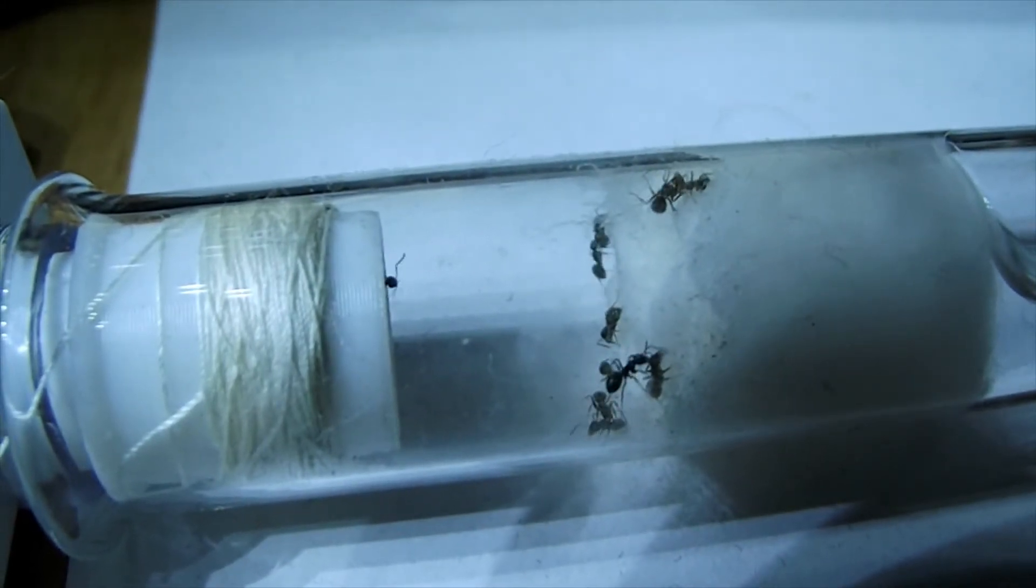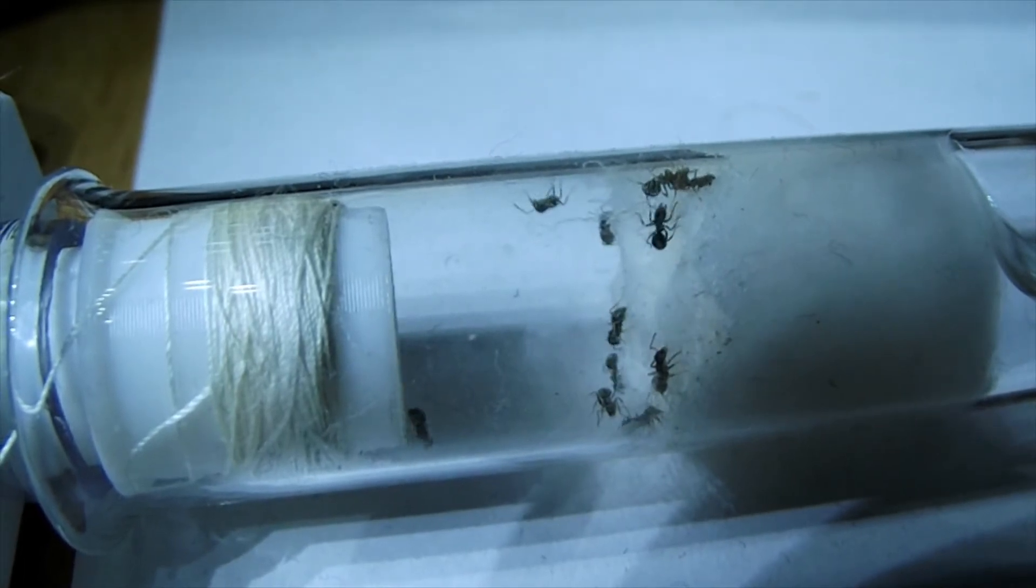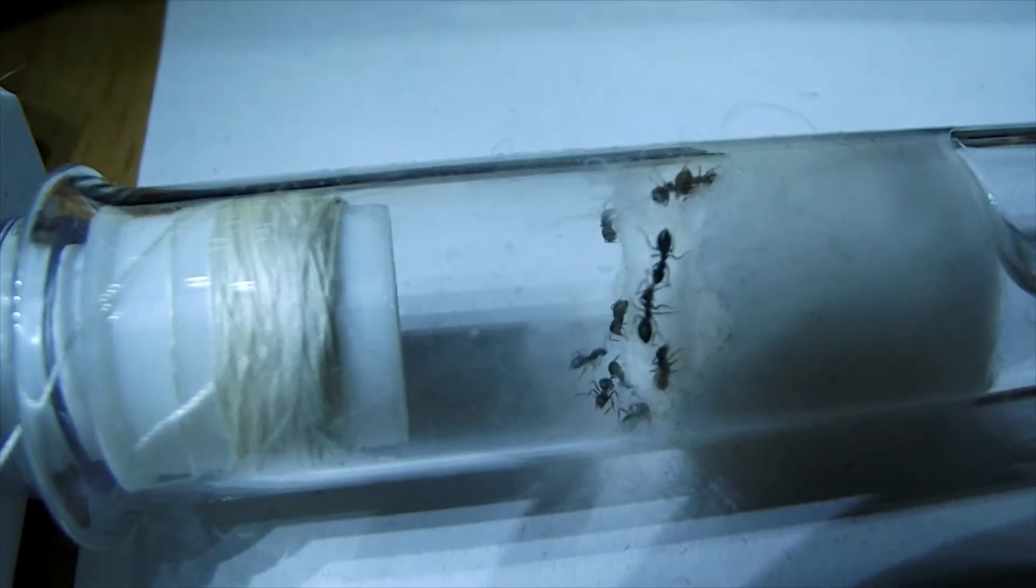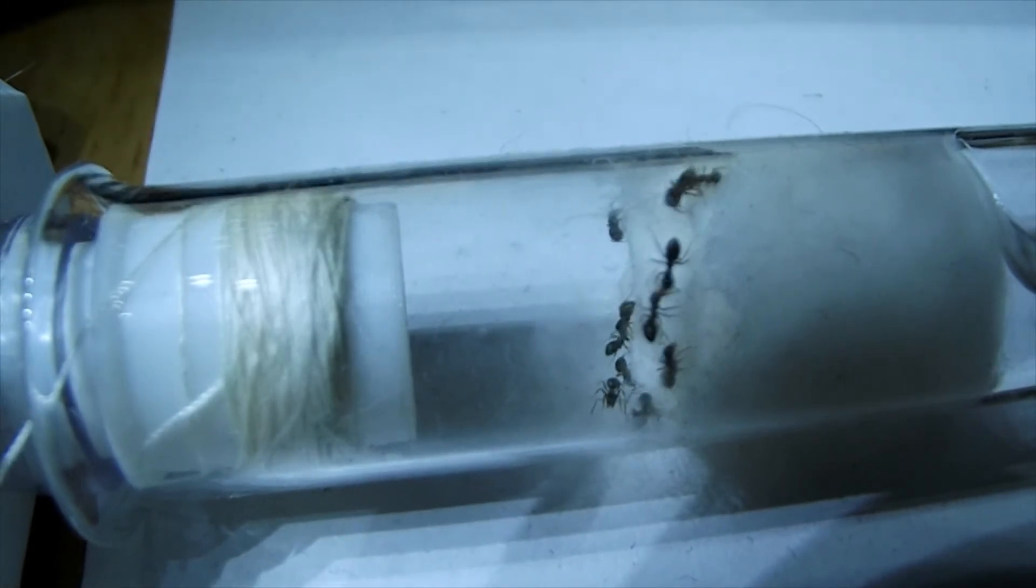What you're looking at here are my little girls in their water test tube. This is joined onto the side of their setup, and as you can see they're shuttling in and out constantly to keep the colony in water.